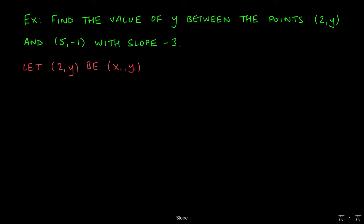With this we can do the typical assignment as we normally do. We can assign (2, y) to be our first point and (5, -1) to be the second point. Remember that the slope formula is (y₂ - y₁)/(x₂ - x₁).